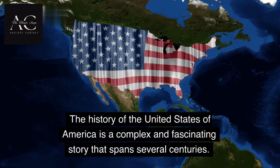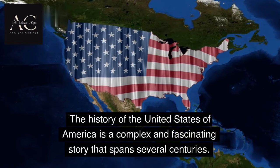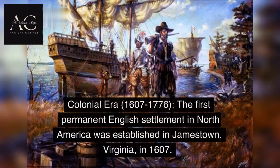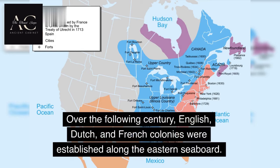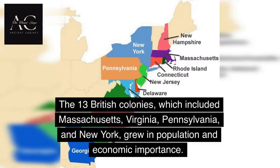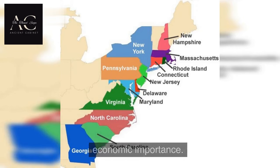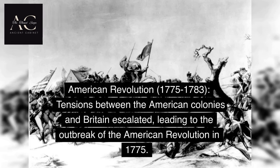The history of the United States of America is a complex and fascinating story that spans several centuries. Colonial Era: 1607 to 1776. The first permanent English settlement in North America was established in Jamestown, Virginia in 1607. Over the following century, English, Dutch, and French colonies were established along the eastern seaboard. The 13 British colonies, which included Massachusetts, Virginia, Pennsylvania, and New York, grew in population and economic importance.